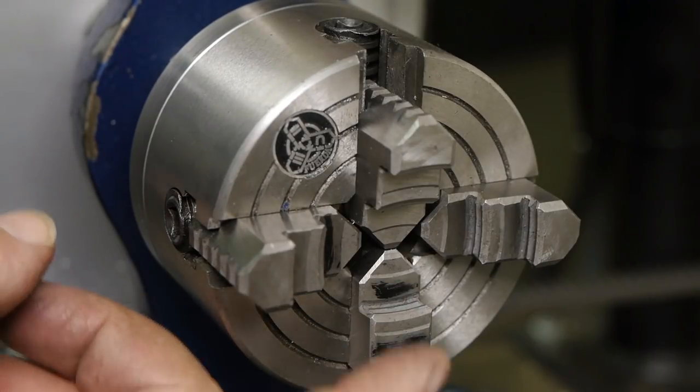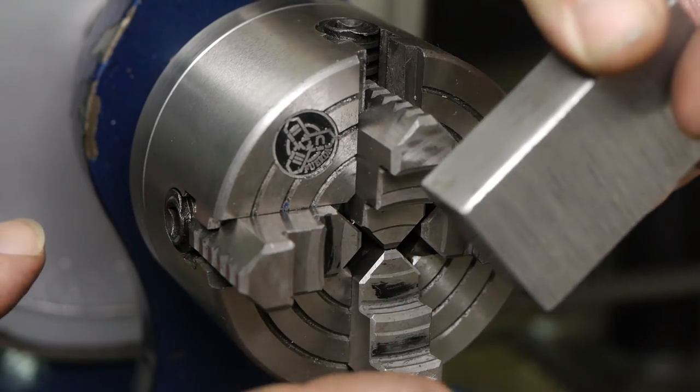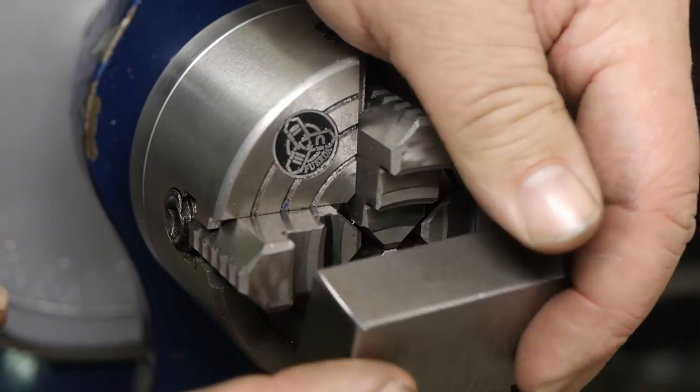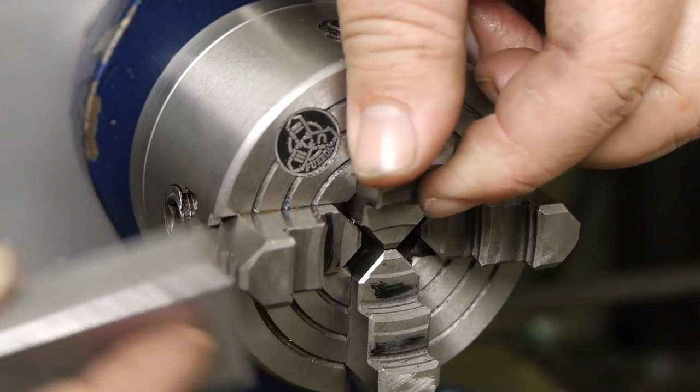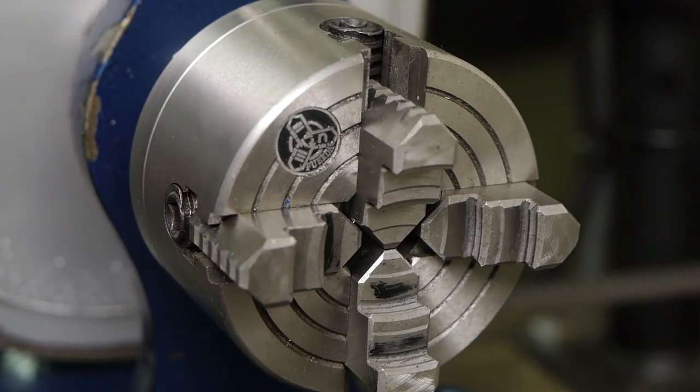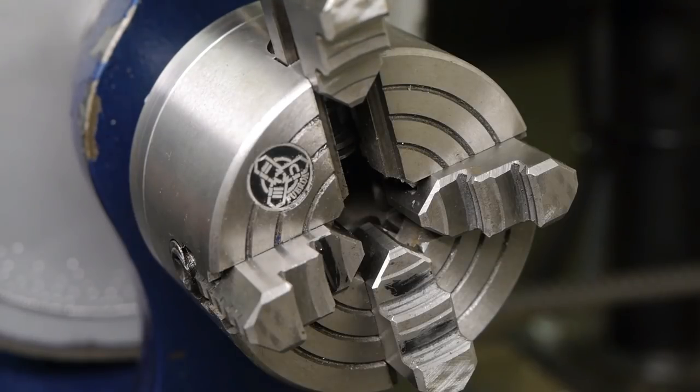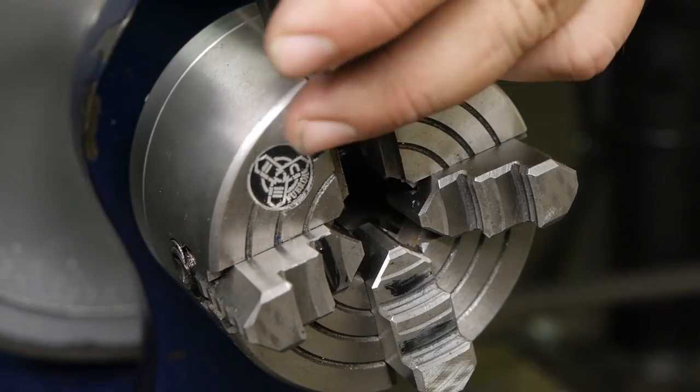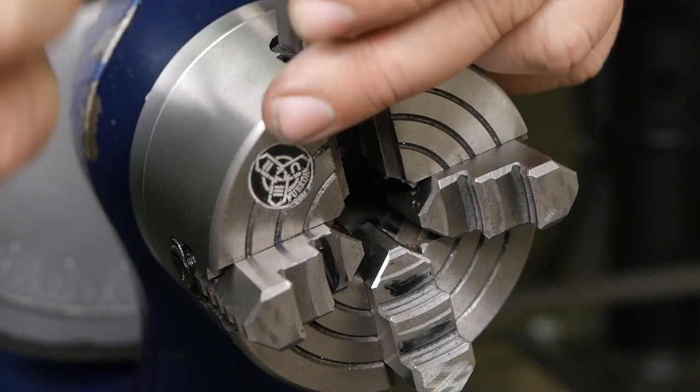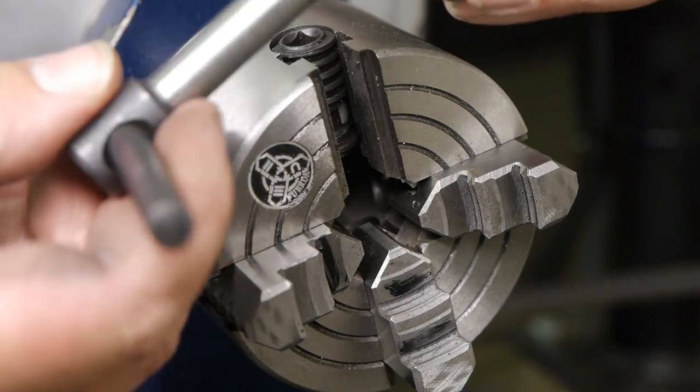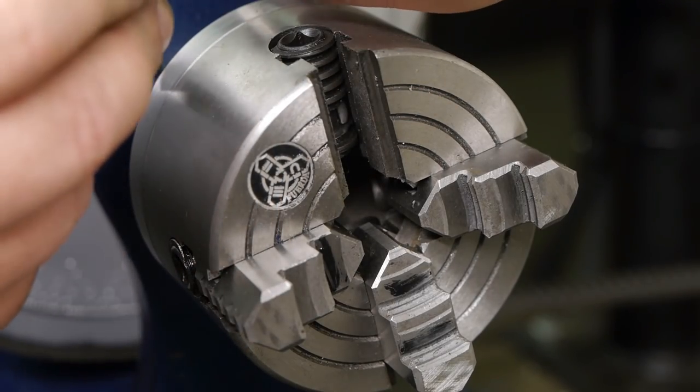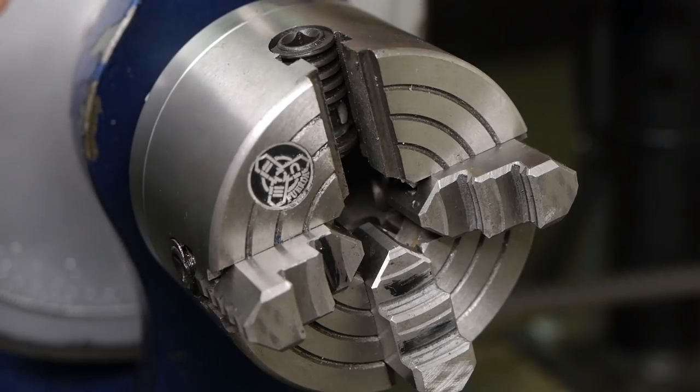As you can see the jaws are interfering with each other, so I will have to flip this one over. Maybe that one as well. I turned down the chuck key a little because it was fouling the underside of the chuck, I mean the jaw.